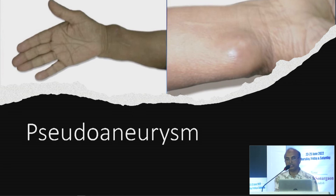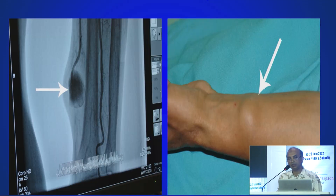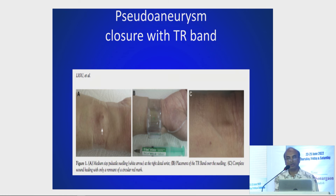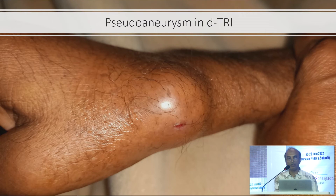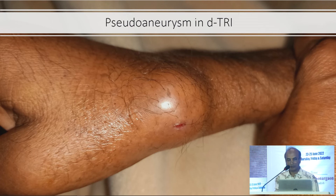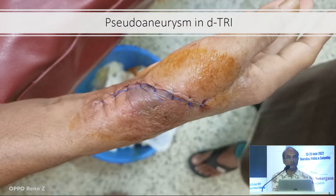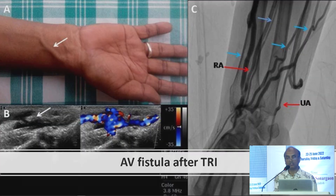Pseudoaneurysm of the radial artery can occur but can be treated by applying a radial band — maintained compression is the treatment of pseudoaneurysm. This is a pseudoaneurysm of the distal radial artery from Professor Sabina Hassan's case, which needed to be operated on for removal.